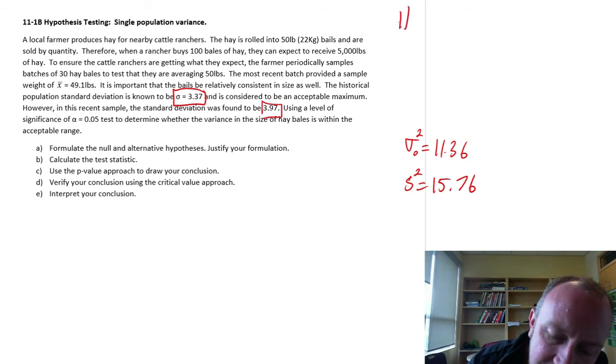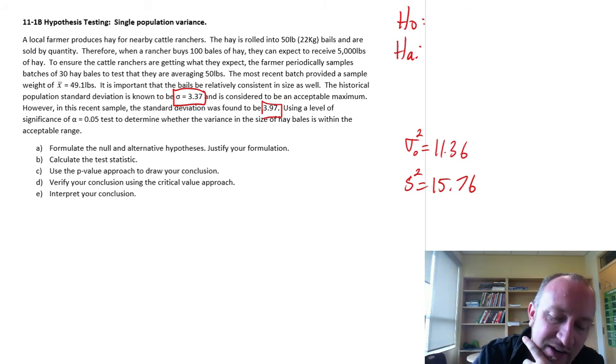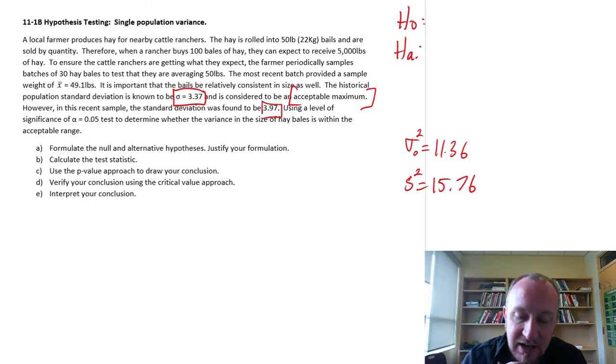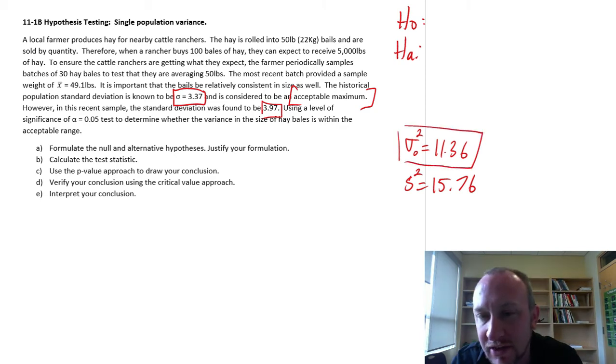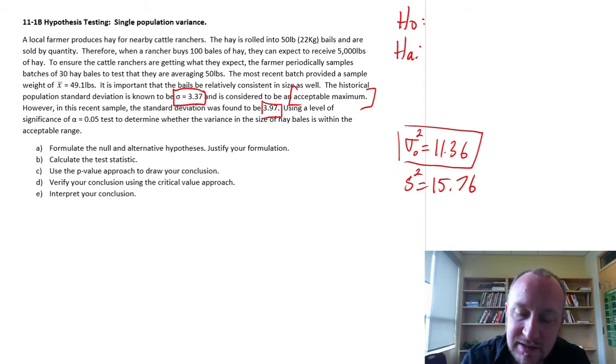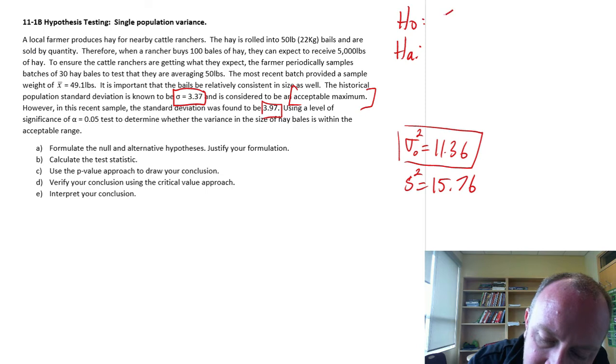So here we have our null and our alternative. We want it to be within the acceptable range, and it's told us that here we have a maximum standard deviation of 3.37, which means a maximum variance of 11.36. And we want to be no more than 11.36. So here's our unknown population variance. Is it less than or equal to 11.36? Or is it greater than 11.36?